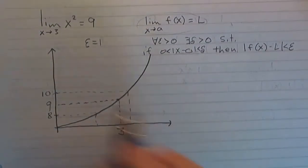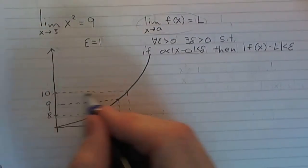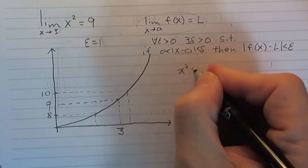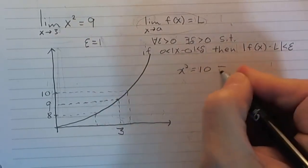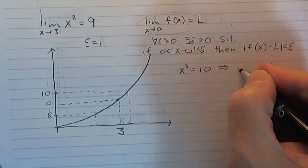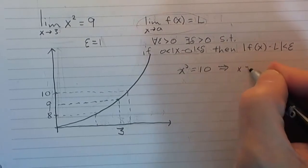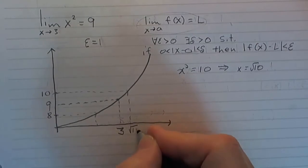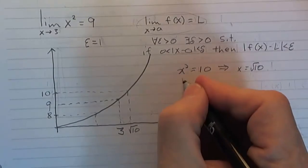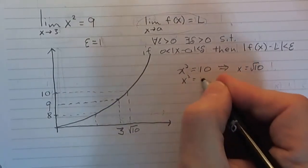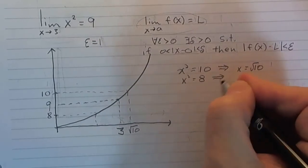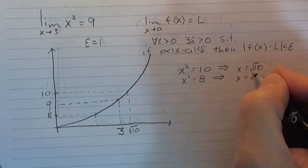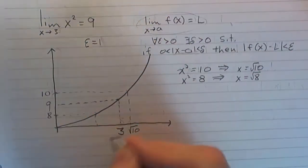What we want to do is come over here and find a delta neighborhood so that every value of x in that delta neighborhood will give me a function value in the epsilon neighborhood. I need to see what this 10 corresponds to on the x-axis. So, x squared equals 10 means x equals the square root of 10. And for the 8, x squared equals 8 corresponds to x equals the square root of 8.